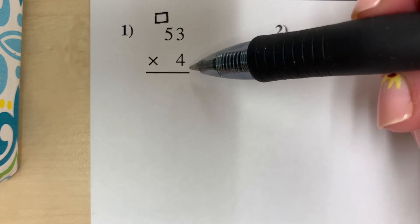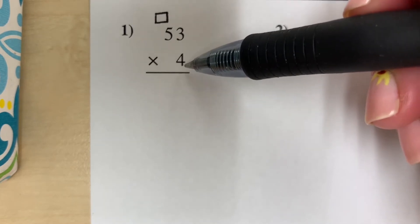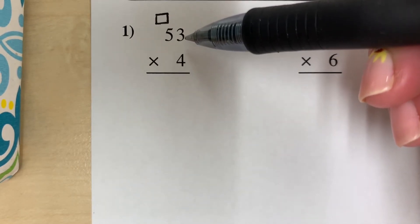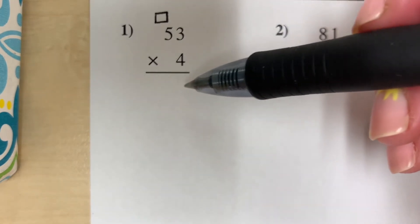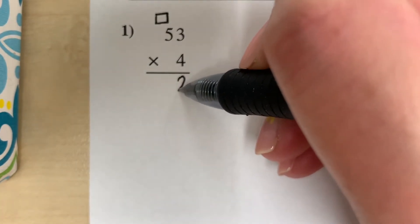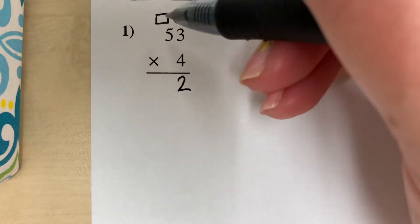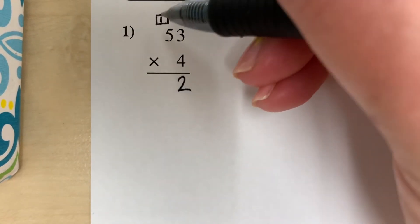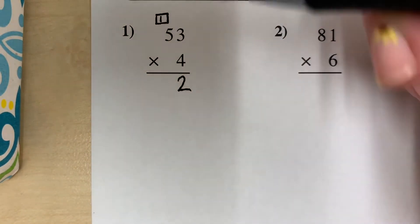So first we start with our ones places. So 4 times 3, which is 12. We're going to put the 2, the ones part of that, down here, and we're going to put 1 up here, carrying the 1, so 12.